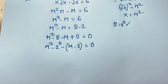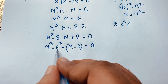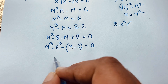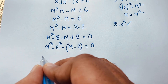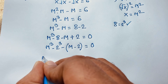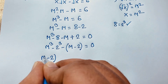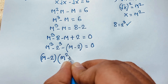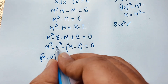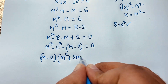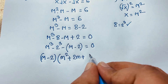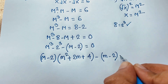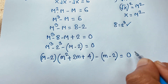Now we have m³ minus 2³. You know that a³ minus b³ equals (a minus b)(a² plus ab plus b²). So applying this formula: a is m and b is 2, so a² plus ab gives m² plus 2m, and b² is 4.